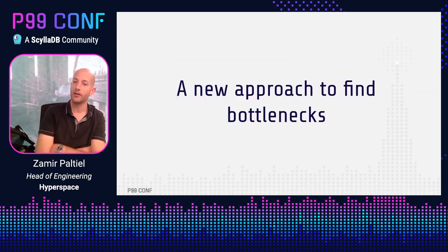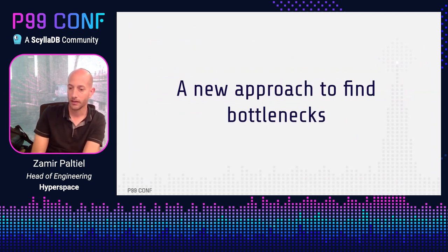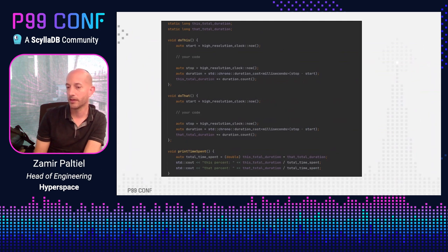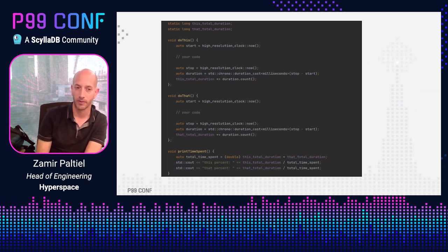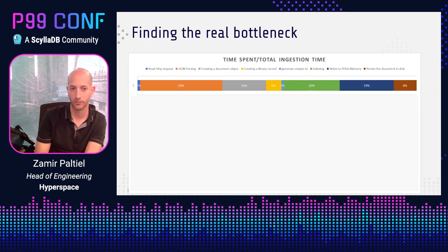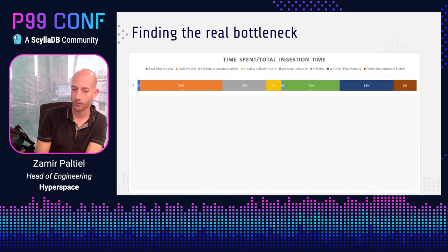I want to present a new approach to find bottlenecks, specifically off-CPU bottlenecks. Our hypothesis: if you have a bottleneck and you add more and more load to the system, and you measure the amount of time spent in each step as you add more load, the bottleneck will become more significant. So we added simple measurements in C++ before and after each step to measure how long it took. We noticed interesting things: the flame graph was inaccurate — JSON parsing actually took only 29% of the time, because the flame graph doesn't represent off-CPU time.